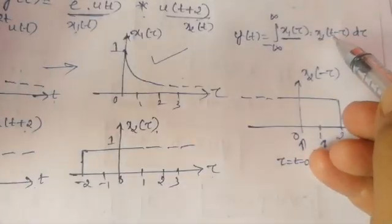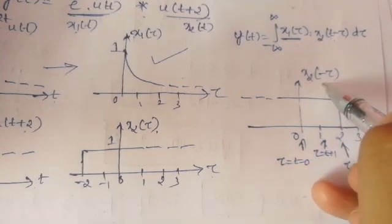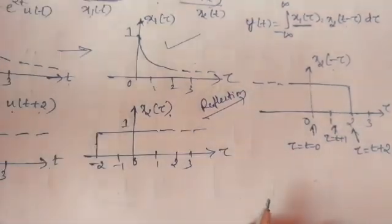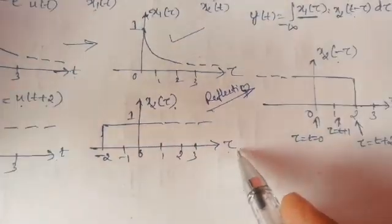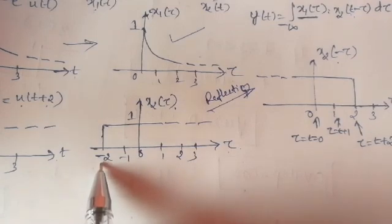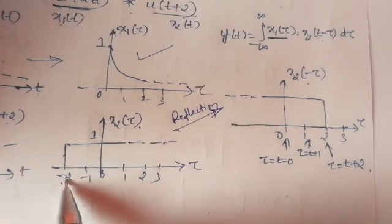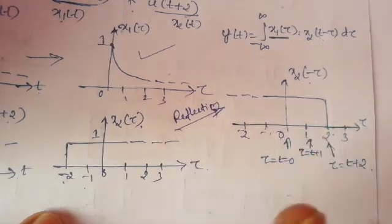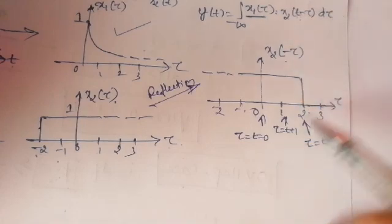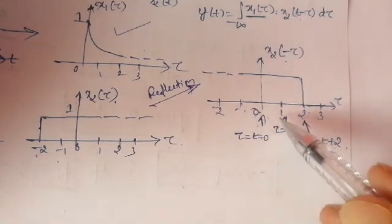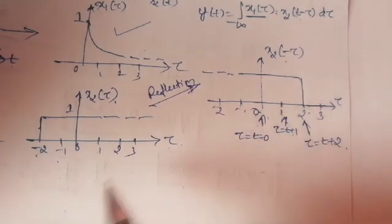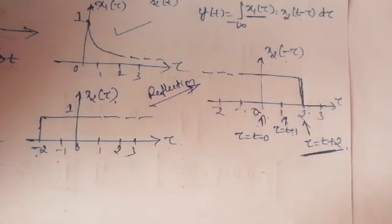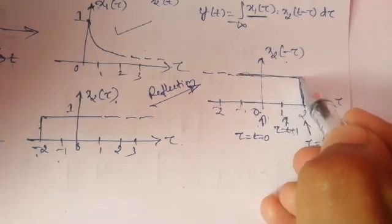x2 of t minus tau means we keep t equal to zero first. Substituting t equal to zero we get x2 of minus tau, which means reflection — we take the mirror image of x2 of tau. Replacing tau by minus tau: tau equal to minus 2 becomes plus 2, minus 1 becomes plus 1, 0 stays 0, and so on. Then shifting by t, the reference point becomes tau equal to t plus 2.